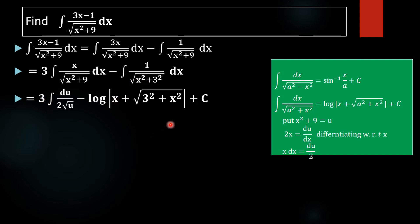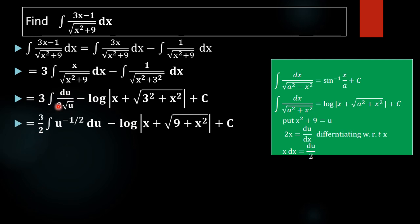Here we applied the direct formula of integration, and here we applied the substitution method. In the next step we take 3 by 2 outside, and rewrite root u as u raised to minus half, since 1 by root u equals u raised to minus half.